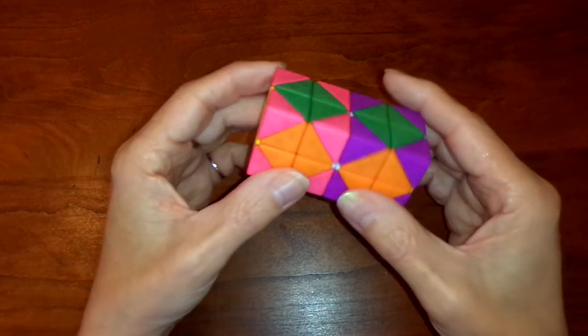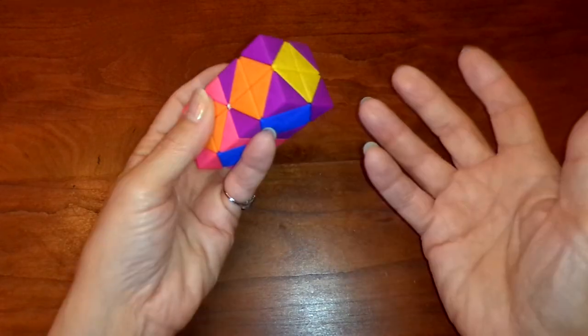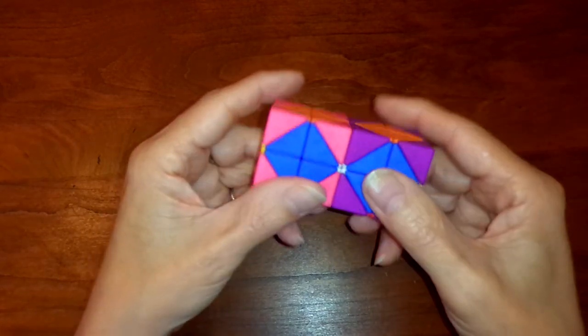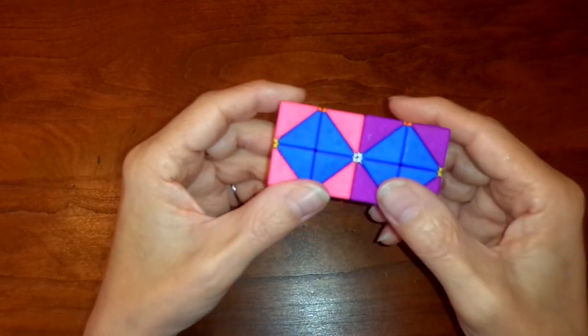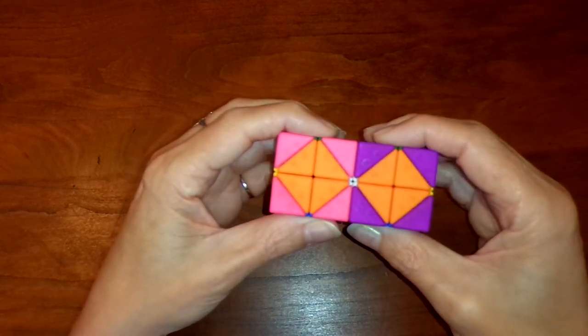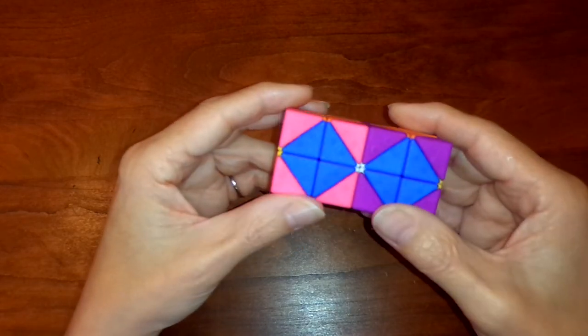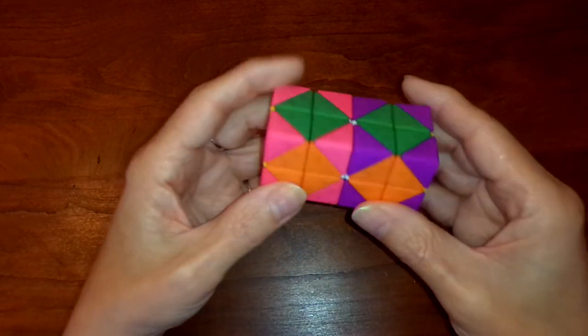And then the most outrageous of all would be to just take the puzzle entirely apart and reassemble it. Because if you started off in some legal state, then you could prove that it's solvable to reassemble it. But nobody would consider that to be an actual solution to the puzzle.